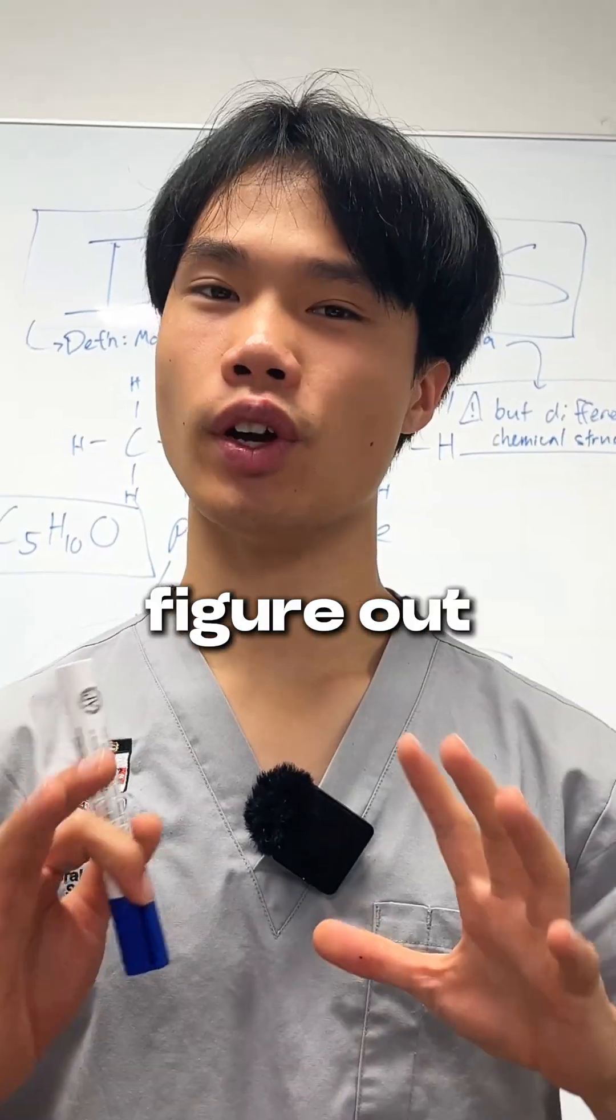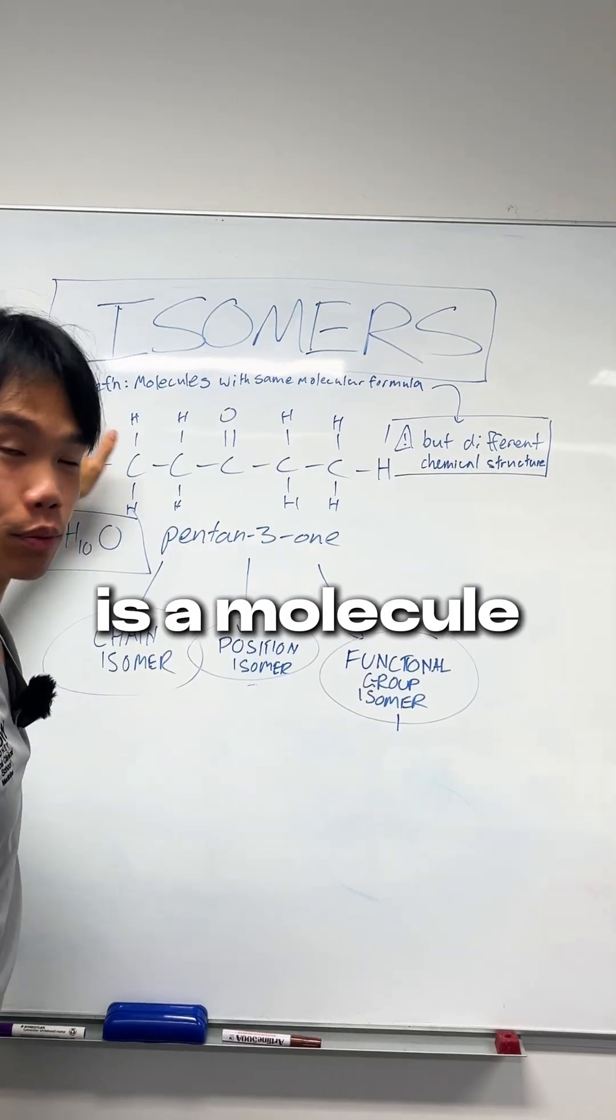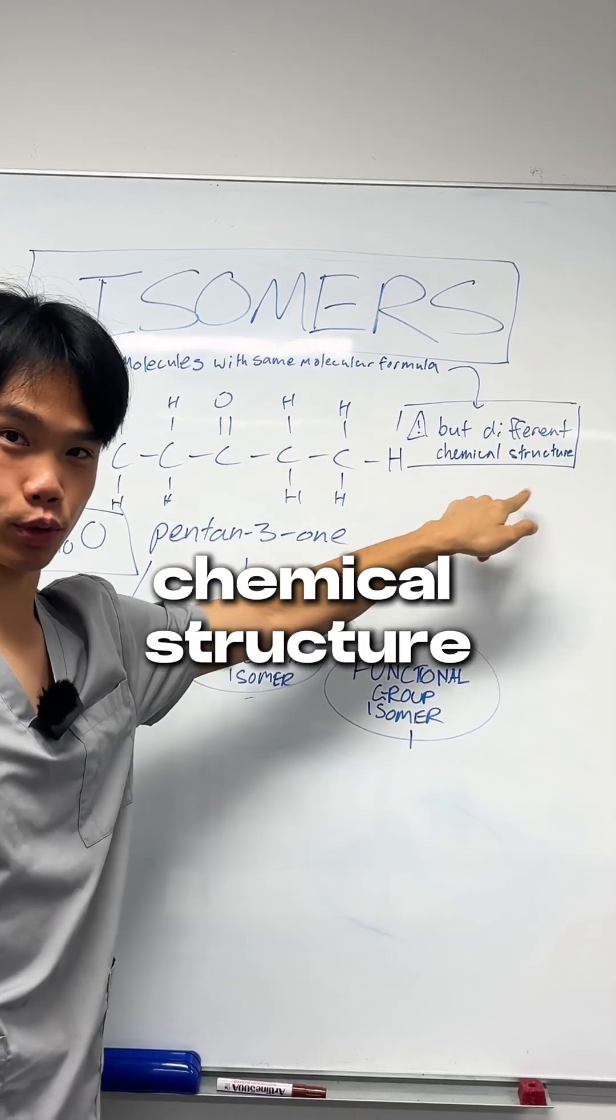If you know these three isomers, you can figure out every isomer. An isomer is a molecule with the same molecular formula but a different chemical structure.